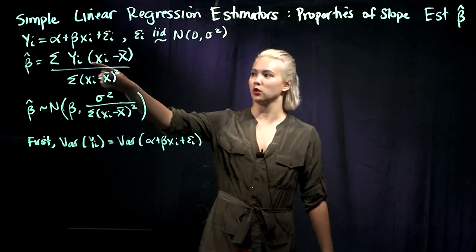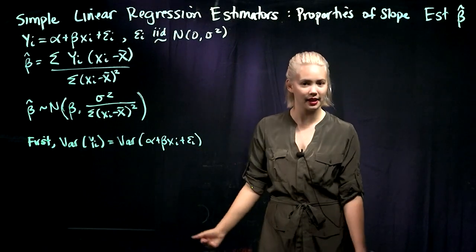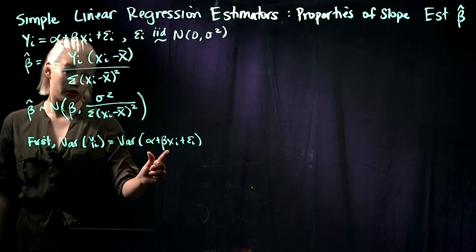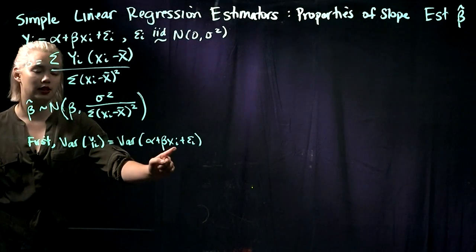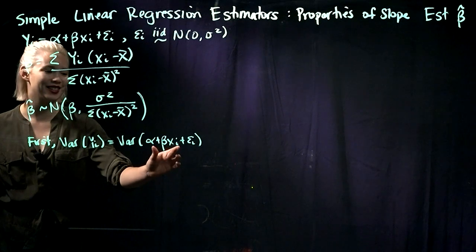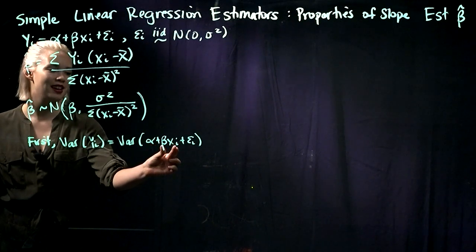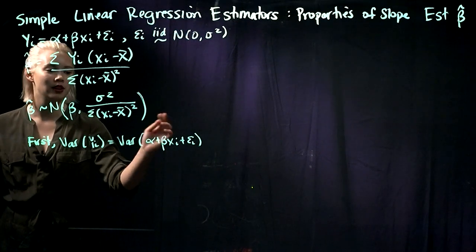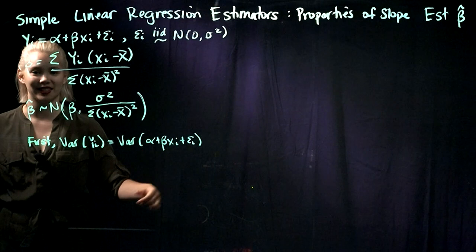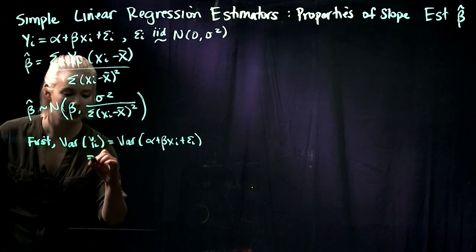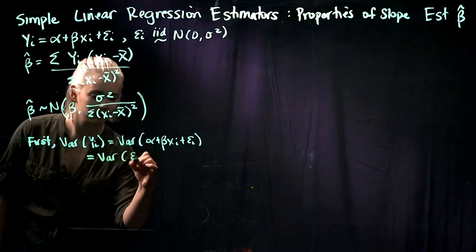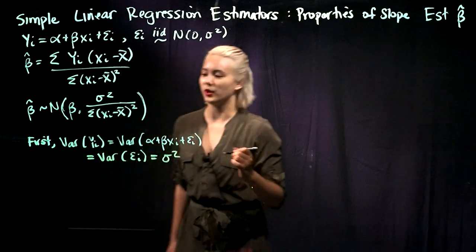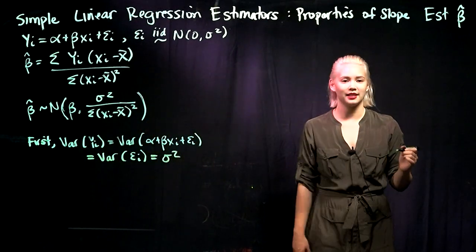First we just plug in what yi is: yi equals alpha plus beta xi plus epsilon i. Alpha and beta are parameters, so those are just constants, and our data xi is also a constant. Since we have constants plus a random variable, we know that the variance of constants plus a random variable is the same as just the variance of the random variable. And we know that the variance of the epsilon i's is sigma squared, so the variance of the yi's is sigma squared.